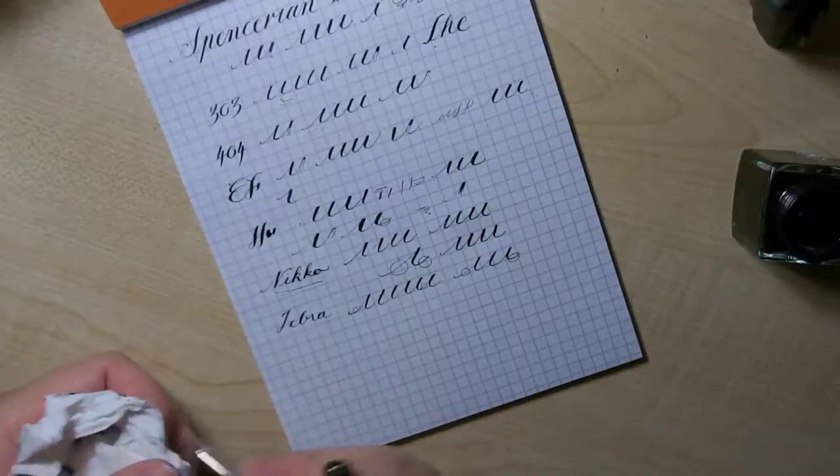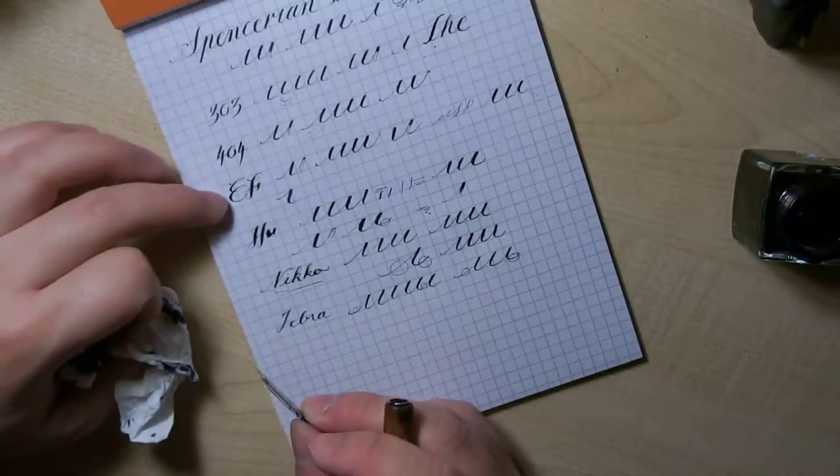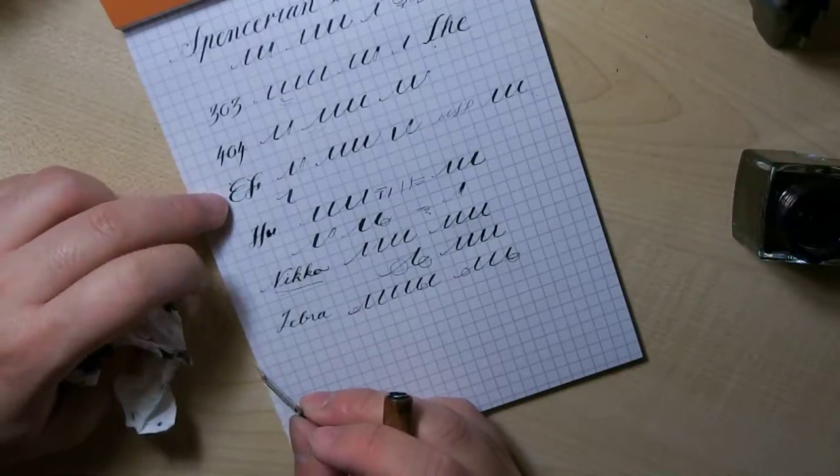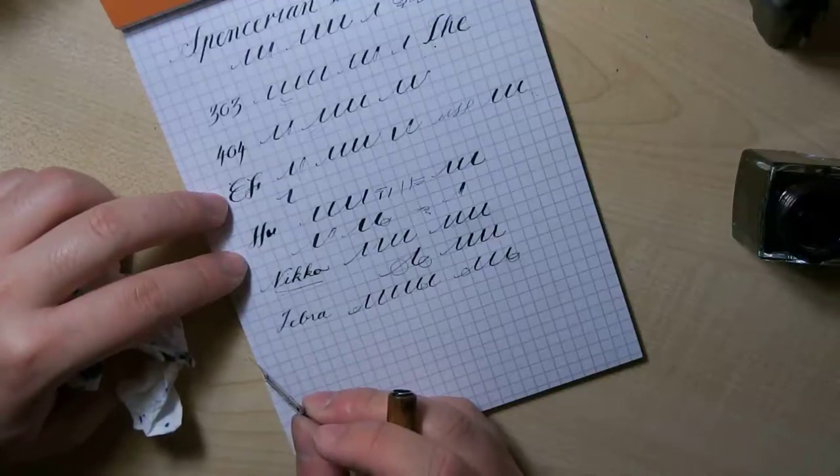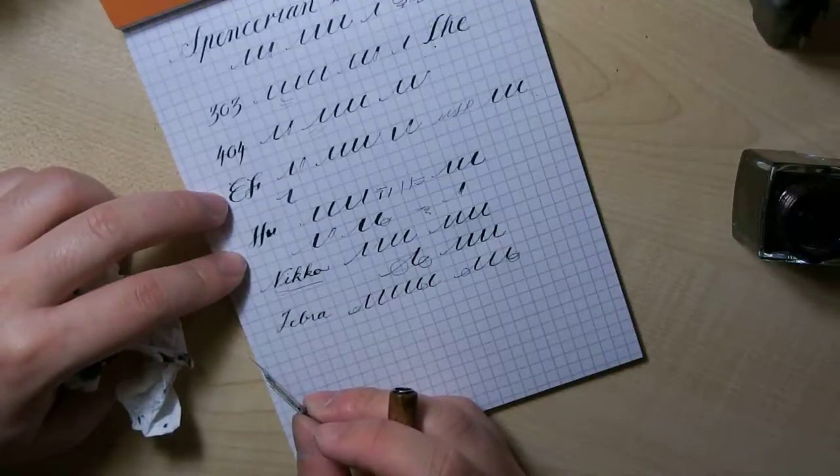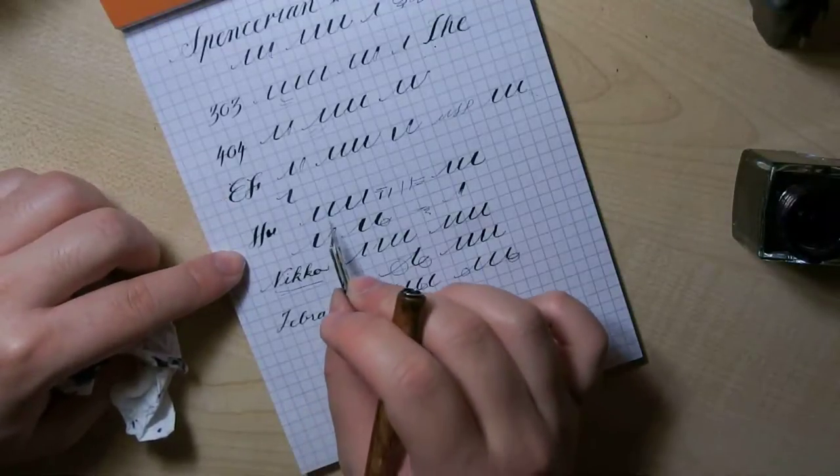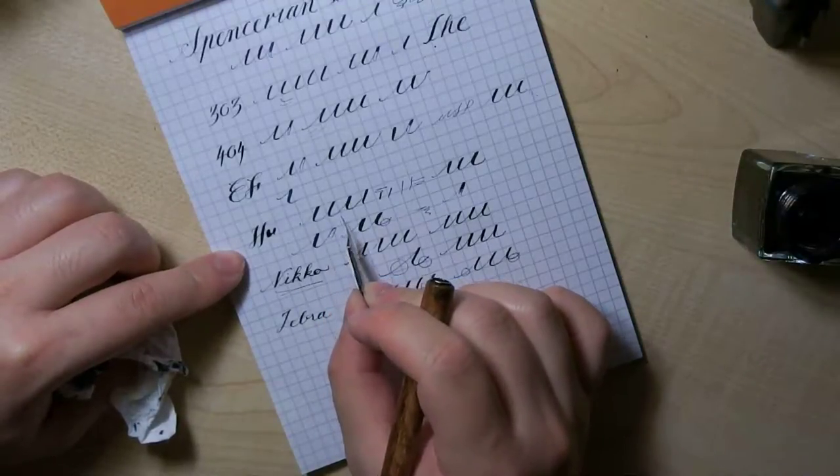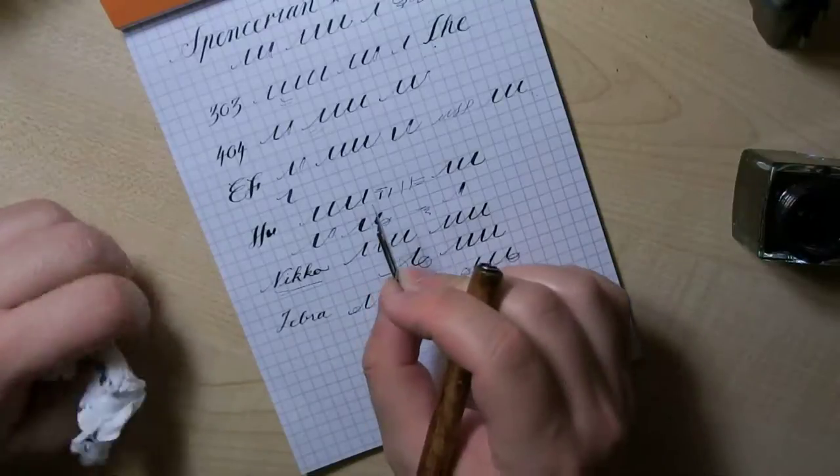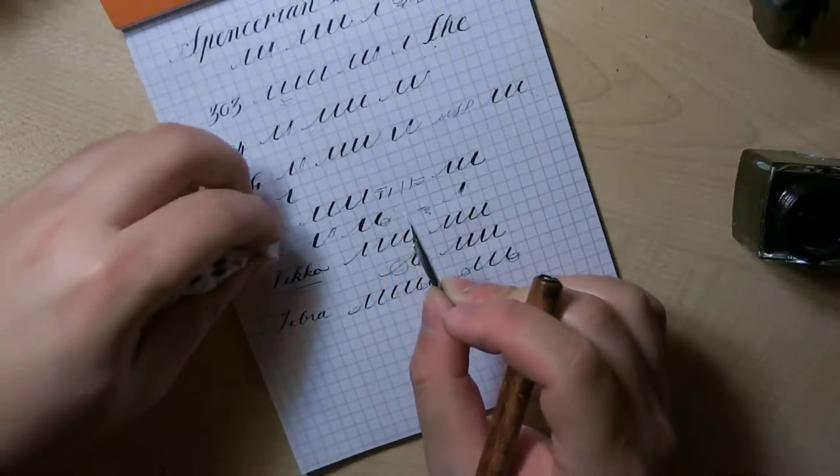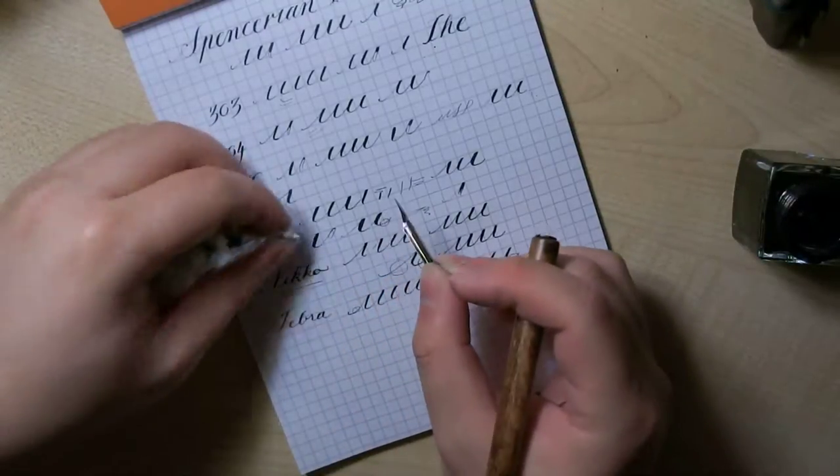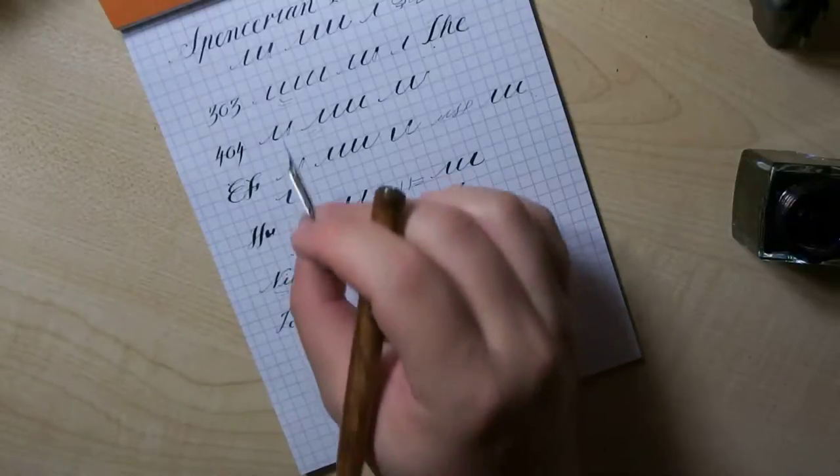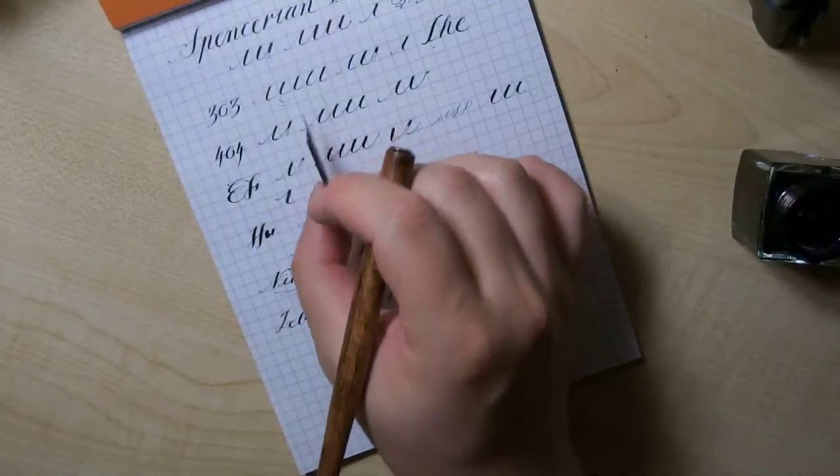And then go with the EF I think. Now the Hunt is very flexible and very thick. If you know what you're doing, if you know exactly what you're doing, the Hunt is very good. I don't know what I'm doing so I'm not going to be using the Hunt any time too soon. But I'm going to stick with the 303 and the 404 for now.